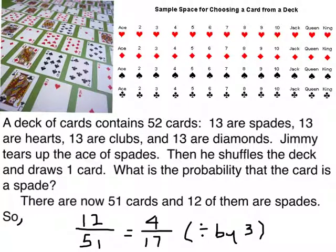Remember, a deck of playing cards contains 52 cards. 13 are spades, 13 are hearts, 13 are clubs, and 13 are diamonds, just like this. Now, Jimmy tears up the ace of spades. Now there are only 51 cards in the deck. He shuffles the deck and he draws one of those 51 cards out. What is the probability that the card is a spade?